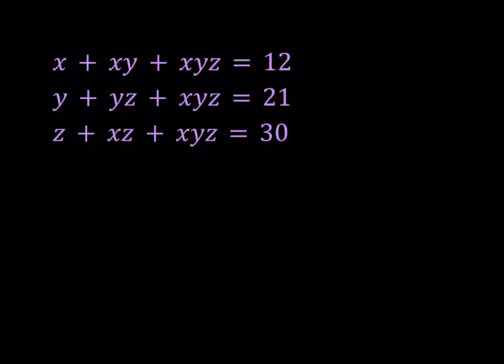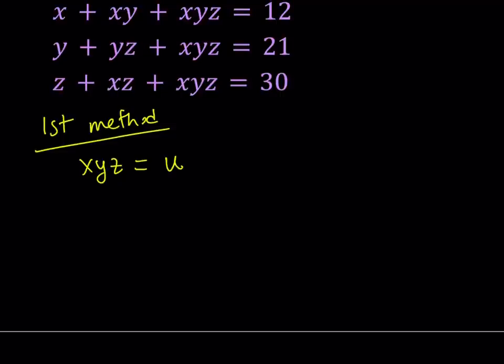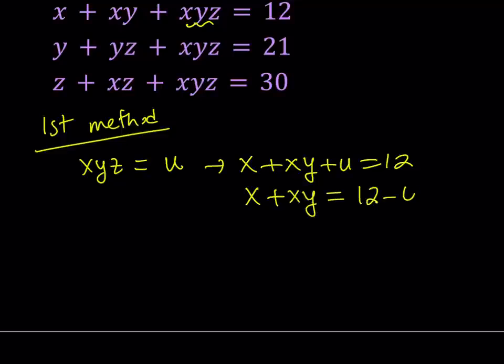So I'm going to start by using substitution. And by the way, I'll be presenting two methods. Hopefully you can compare and contrast. So first method involves letting xyz equal u. From here, using the first equation, we get that x plus xy plus u is equal to 12. And basically, you can just isolate the x plus xy here because that's something we are going to be using later on. So let's go ahead and isolate that. x plus xy is going to be 12 minus u.